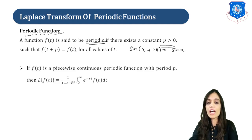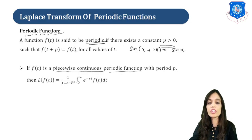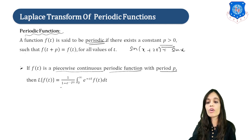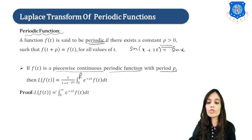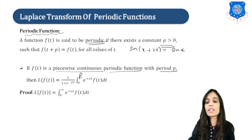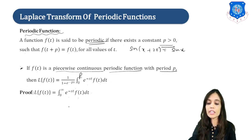Now let us study the definition of the Laplace Transform of a periodic function. If f(t) is a piecewise continuous periodic function with period p, then the Laplace of f(t) equals 1 upon (1 minus e raised to minus ps) times the integral from 0 to p of e raised to minus st times f(t) dt. Now let us start with the proof, beginning from the standard definition.